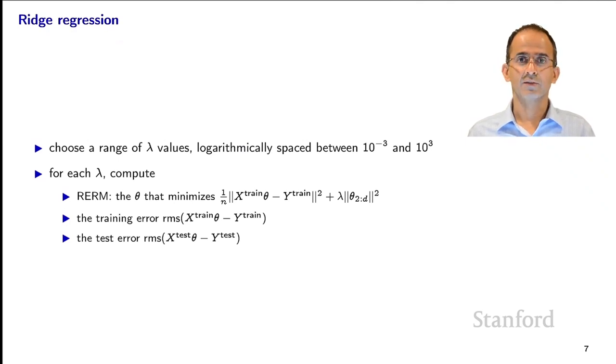We choose a Theta, we find the Theta that minimizes this quadratic function of the vector Theta. Notice that we've used a capital Y here, even though capital Y here is actually just a vector and not a matrix because M is 1. We've only got a single target variable. And notice also that we're not regularizing the constant term in Theta. Once we've got these Theta values, I think we have 50 different Lambda values and so we get 50 corresponding Theta values. Then, for each one of those Theta values, we can compute the training error simply by computing the RMS of X train times Theta minus Y train. That's just a vector. So we take the 1 on n times the sum of the squares of that vector and then square root that quantity. And similarly, the test error, X test Theta minus Y test.